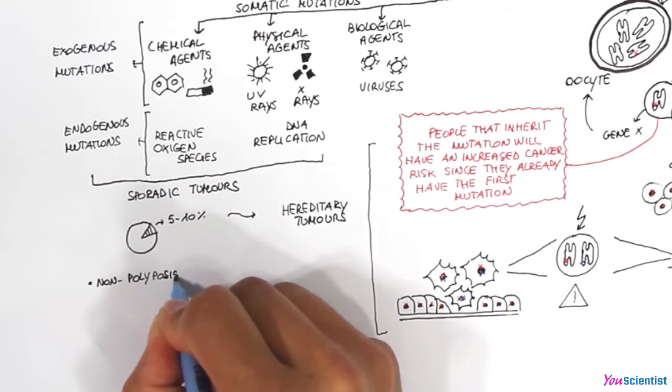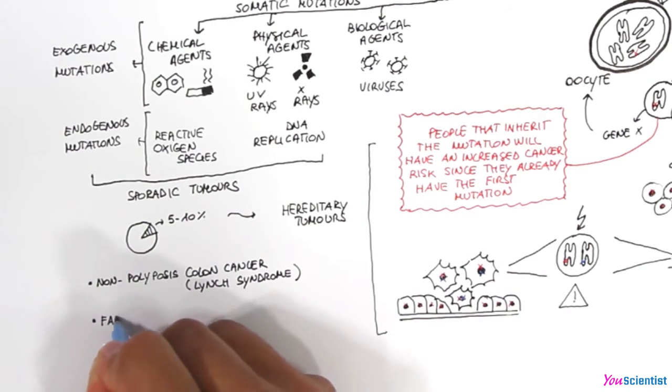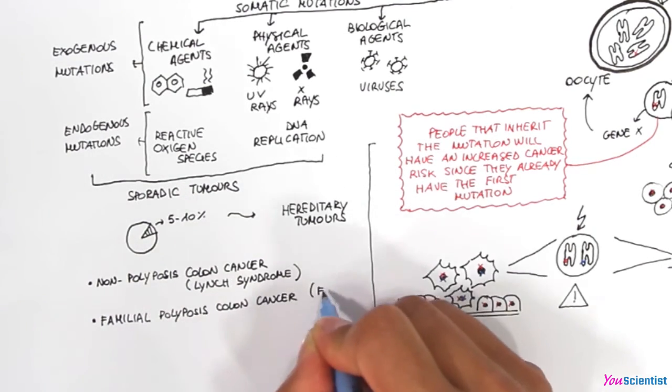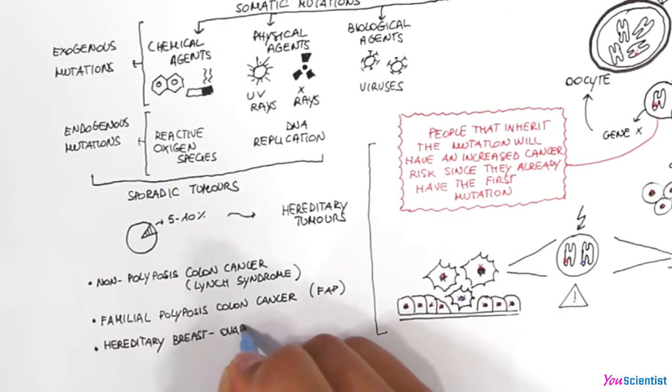Some examples of hereditary tumors are the nonpolyposis colon cancer, or the familial adenomatous polyposis, or the hereditary breast and ovarian syndrome.